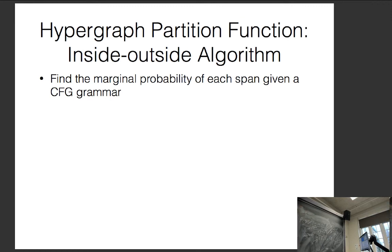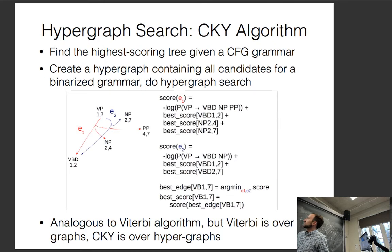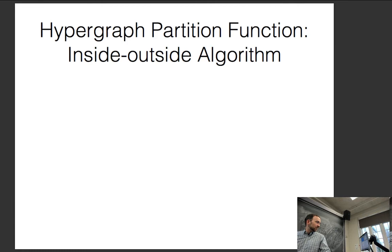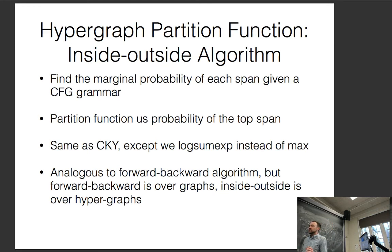The inside-outside algorithm is the same as CKY, but instead of taking the best score, you take the log-sum-exp, like in CRFs. This is called the inside-outside algorithm. Once you can calculate the partition function, you can calculate the score of the best tree, which becomes your loss function: score of the best tree minus the partition function.